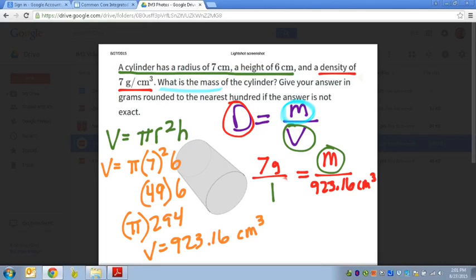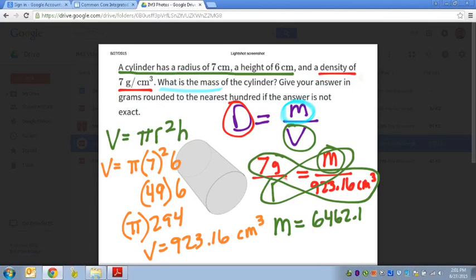So to find the mass, the thing that we need, we use this process called cross-multiplication. So that means I multiply this together and this together, so one times the mass will equal the mass. And then seven times 923.16, let's plug that in. 923.16 times seven gives me 6,462.12. But as the answer says, round to the nearest hundred, which means I would say 6,500 grams is the mass. Because the mass is a weight, so it would be grams.